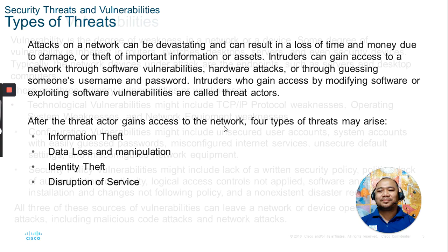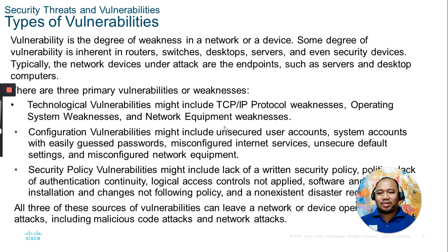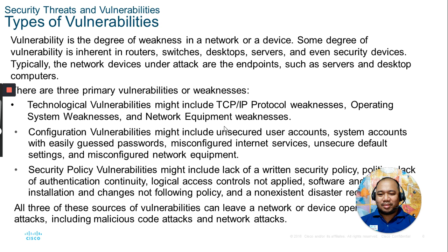Types of vulnerabilities — there are three. A vulnerability is a degree of weakness in a network or a device. Some degree of vulnerabilities is inherent in routers, switches, desktop servers, and even security devices. The three primary vulnerabilities are: technological vulnerabilities, configuration vulnerabilities, and security policy vulnerabilities.